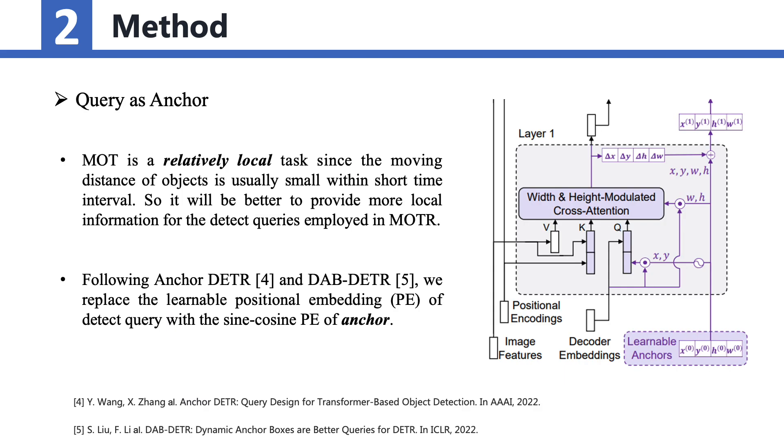Inspired by anchor DETR and DABDETR, a key modification in MOTR V2 involves replacing the learnable positional embedding of the detect query with the sine-cosine positional encoding of the anchor. This integration enables the utilization of YOLO-X detection results within the queries of MOTR, resulting in improved object detection accuracy.